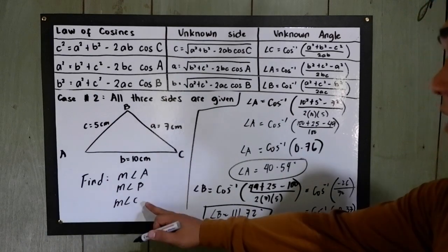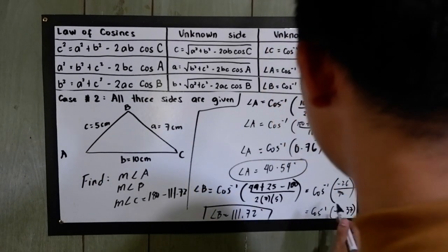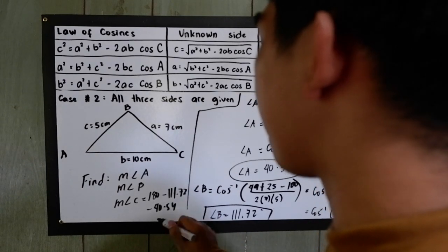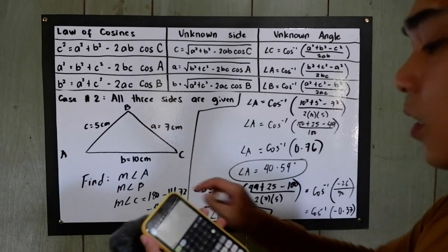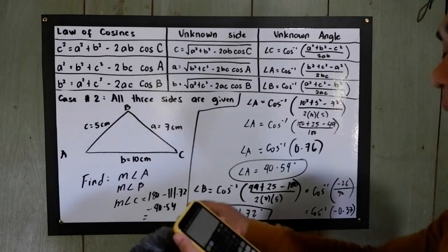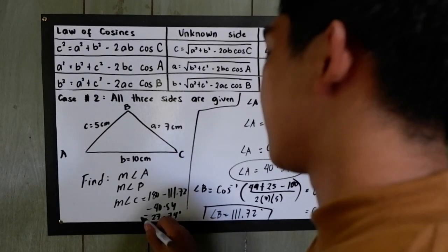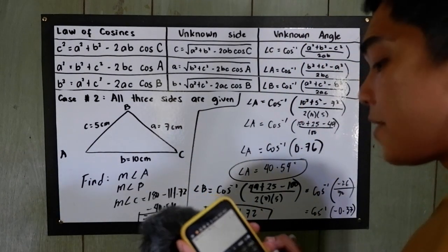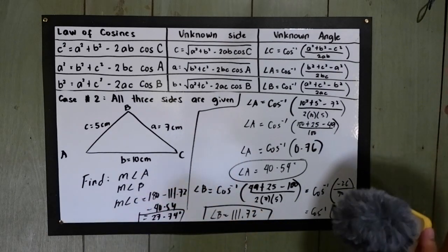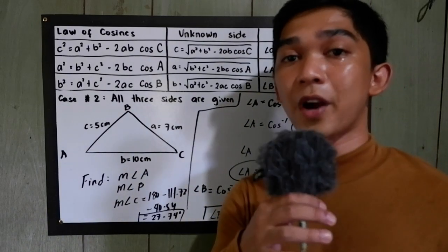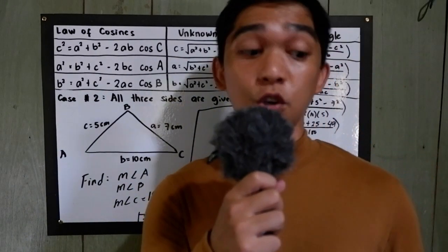To find measure angle C, all we need to do is subtract 111.72 and 40.54 from 180. So 180 minus 111.72 minus 40.54 gives us 27.74 degrees. To check your answers, the sum of angle A, angle B, and angle C must equal 180 degrees, because by the definition of a triangle, all angles must total 180 degrees. So that is the law of cosines. Thank you for watching, Senior Pavlo TV.